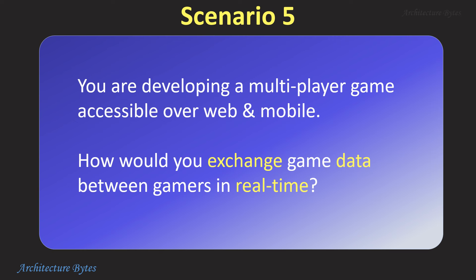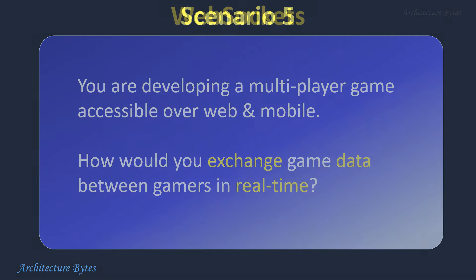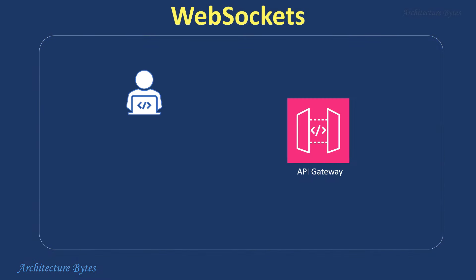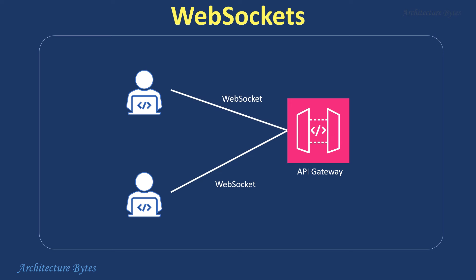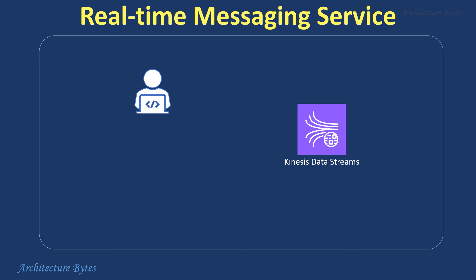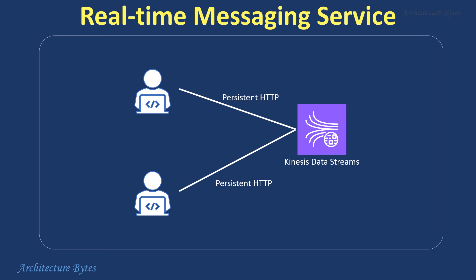You are developing a multiplayer game accessible over web and mobile. How would you exchange game data between gamers in real-time? You can use WebSockets to communicate with API Gateway. WebSockets is a communication protocol that enables a two-way real-time connection between a web browser or mobile app client and a server. Or use a service like Amazon Kinesis Data Streams, which acts as a message broker, allowing clients to publish updates and subscribe to receive updates from other players.